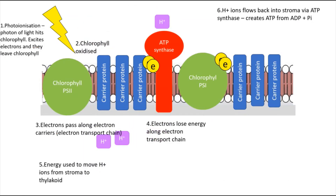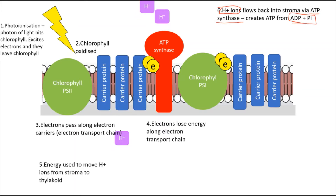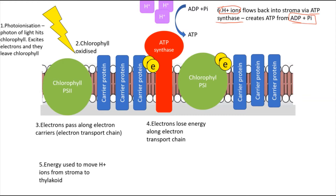The H+ ions, now located in the thylakoid space, flow back into the stroma via the enzyme ATP synthase. As they move back, ATP is created from ADP and inorganic phosphate (Pi).